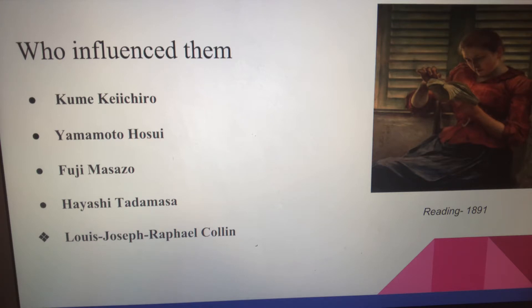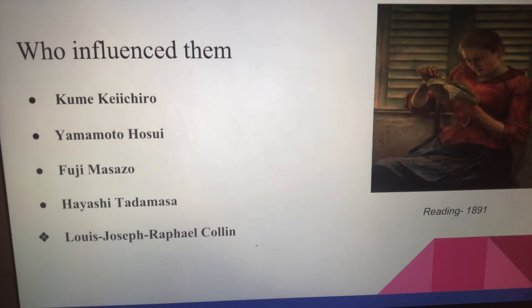This picture in the corner is called Reading, made in 1891. During his stay in Europe, Kurodo visited and fell in love with a little village. While he was there, he met Maria. She served as a model for his works and would come to represent his time in France. Kurodo's natural artistic talent was recognized by the French art world with this painting, which was one of his first.